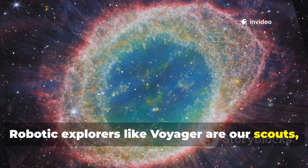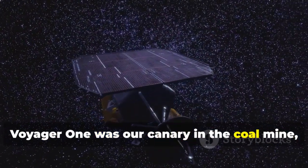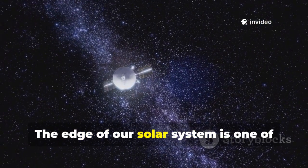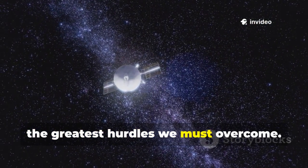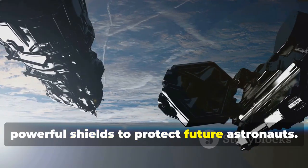Robotic explorers like Voyager are our scouts, braving dangers humans cannot yet face. Voyager 1 was our canary in the coal mine, warning us of the hazards ahead. Its data is essential for planning future missions beyond the solar system. The edge of our solar system is one of the greatest hurdles we must overcome. Engineers will need new materials and powerful shields to protect future astronauts.